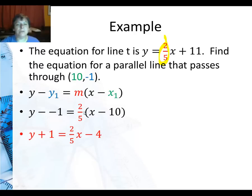Distribute the two-fifths, two-fifths times x is two-fifths x, two-fifths times ten is four, so two-fifths x minus four, subtract one from both sides, and there is the slope-intercept form. This one was the point-slope form. That's it.